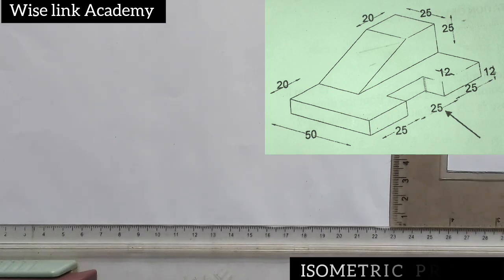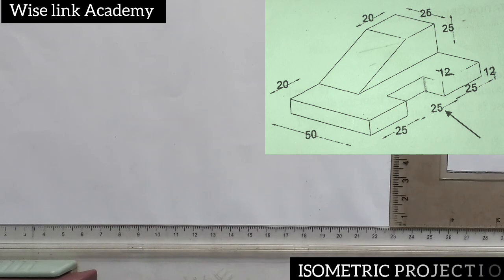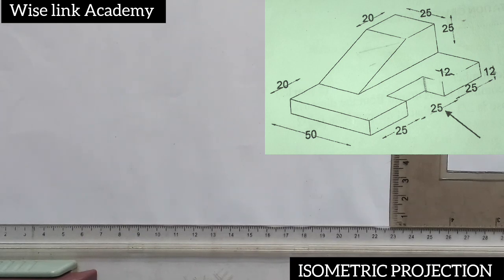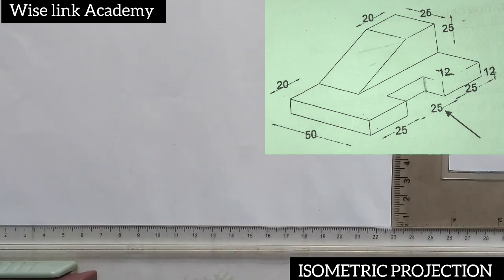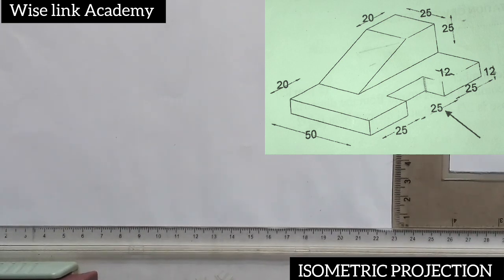So first thing first, my first task is to list out my parameters and to draw out my asymmetric axes. Listing the parameters simply means I need to know my length, breadth, and height. Perhaps I need to draw out my asymmetric axes, so my first task now is to draw my asymmetric axes.